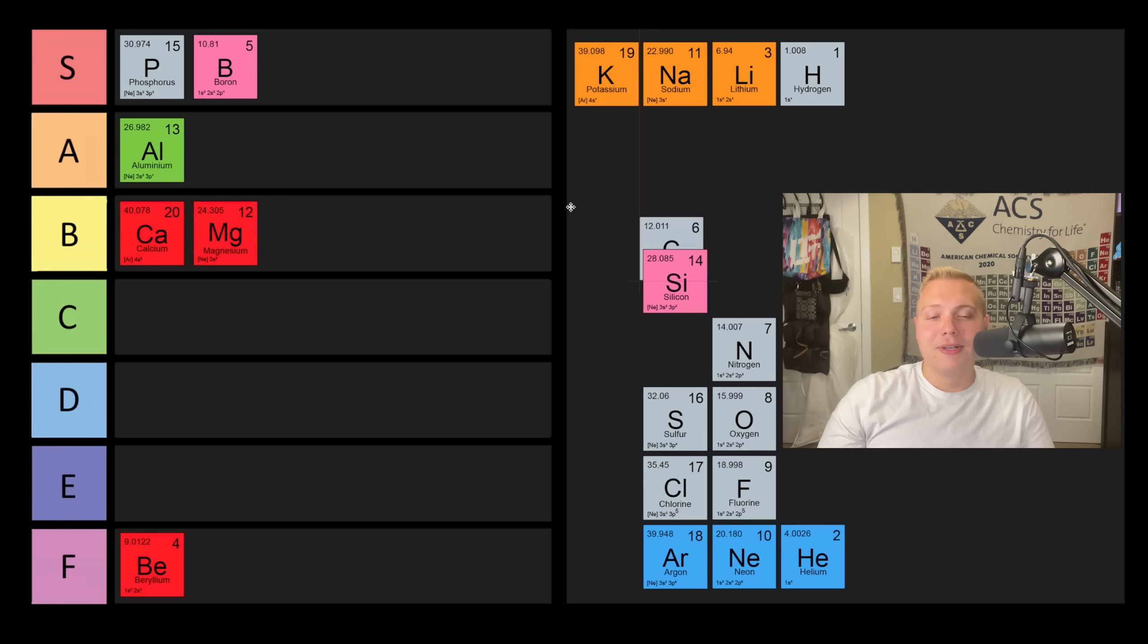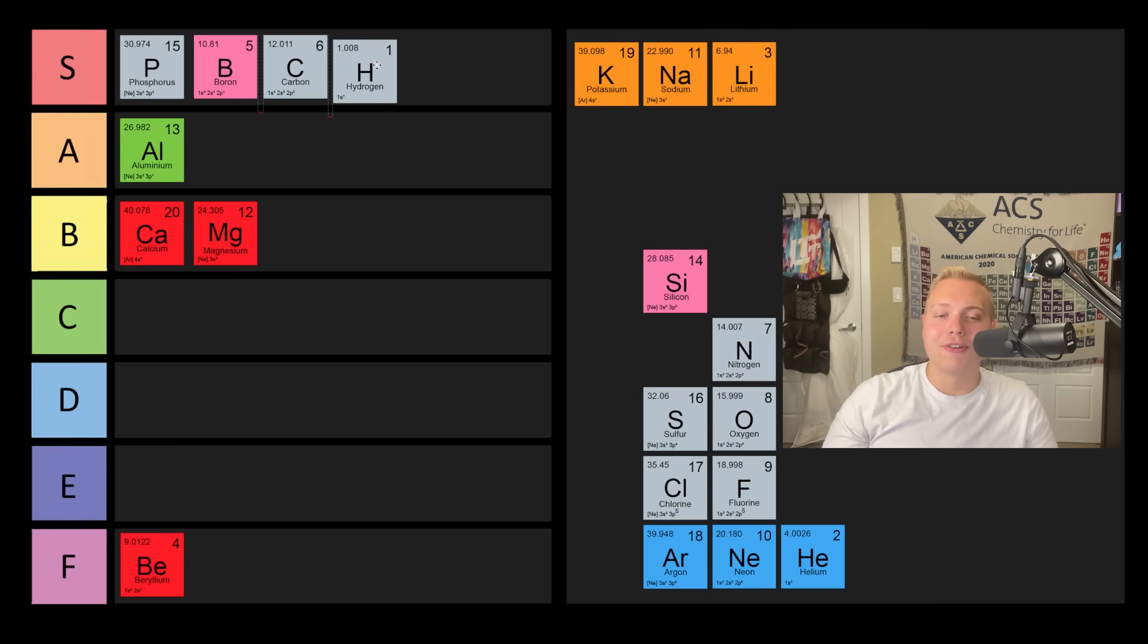So carbon. Carbon can be S tier. Carbon's great. Carbon is the basis for life. Carbon is almost all we care about in organic chemistry. Same with hydrogen, right into S tier. So you don't have too much room in S tier, so we're going to have to be pretty harsh moving forward for the rest.